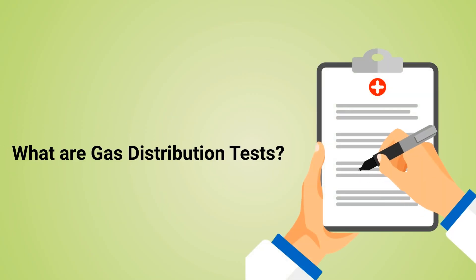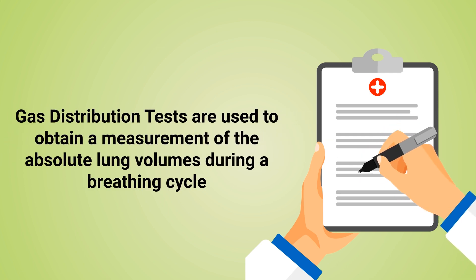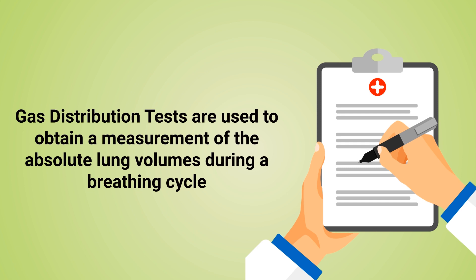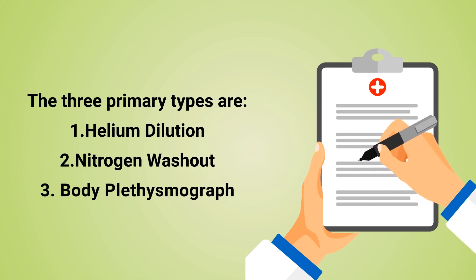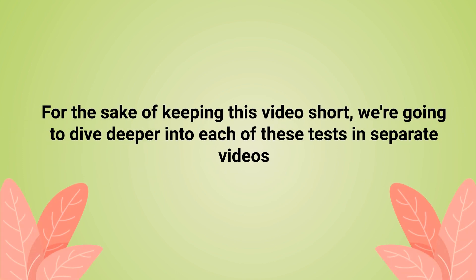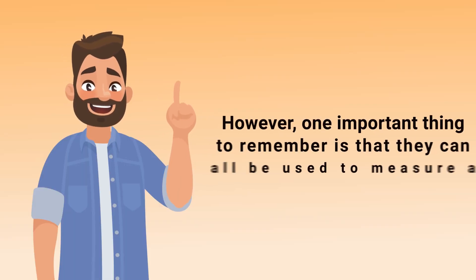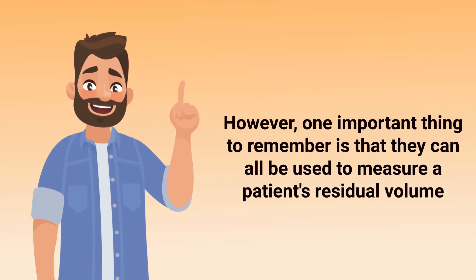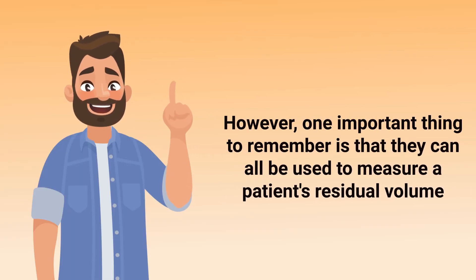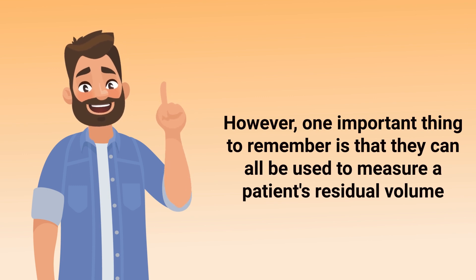Now let's briefly talk about the gas distribution tests. Gas distribution tests are used to obtain a measurement of the absolute lung volumes during a breathing cycle. The three primary types are helium dilution, nitrogen washout, and body plethysmography. We're going to dive deeper into each of these tests in separate videos.